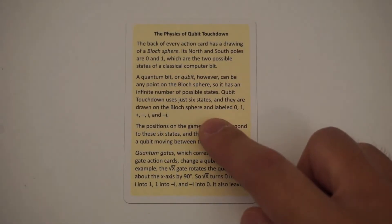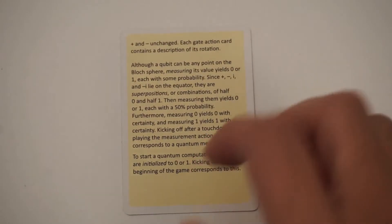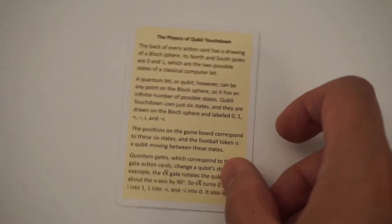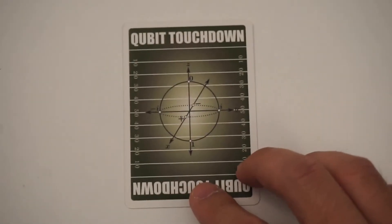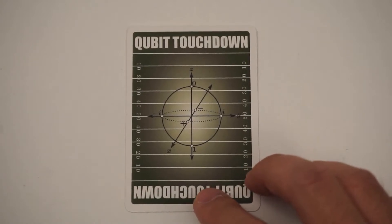Each game includes a card, printed on the front and back, explaining the physics of the game. And I'll just look at the back of every one of the action cards is this picture here of a sphere called the Bloch sphere.